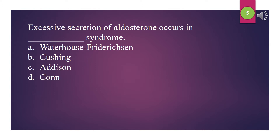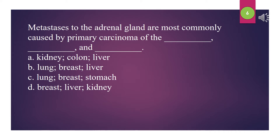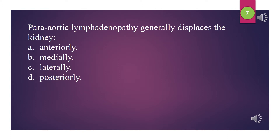The spleen is an intraperitoneal structure. Excessive secretion of aldosterone occurs in what syndrome? A. Waterhouse-Friedrichsen. B. Cushing. C. Addison. D. Conn. The answer is D: Conn syndrome. Metastases to the adrenal gland are most commonly caused by primary carcinoma of what organs? The answer is C: Lung, breast, and stomach.